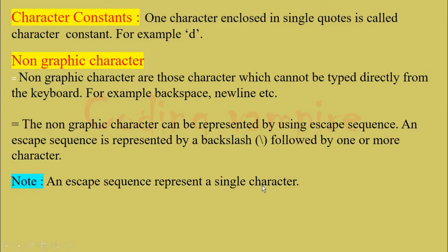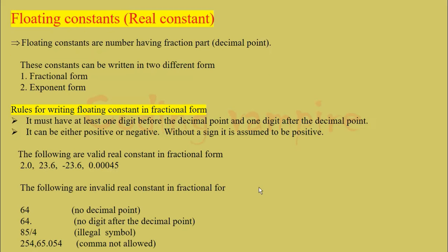So we will use escape sequence when we will write program in the next sections. Floating constant also called real constant. Floating constants are the number having fractional part or decimal point. This constant can be written in two different forms: fractional form and exponent form.